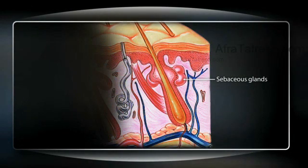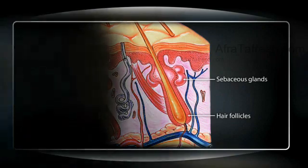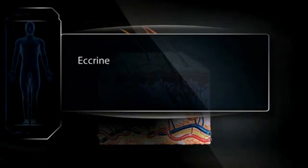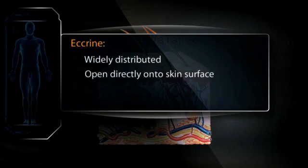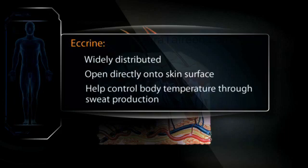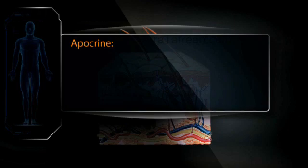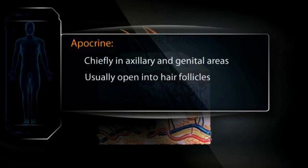Sebaceous glands produce a fatty substance secreted through the hair follicles. These glands are present on all skin surfaces except the palms and soles. Sweat glands are either eccrine or apocrine. The eccrine glands are widely distributed, open directly onto the skin's surface, and help control body temperature through sweat production. In contrast, the apocrine glands are found chiefly in the axillary and genital regions, usually open into hair follicles, and are stimulated by emotional stress.